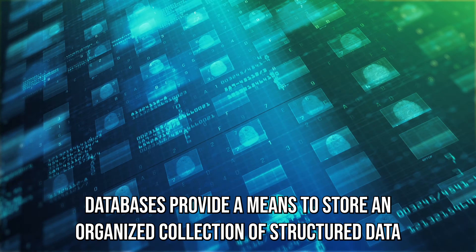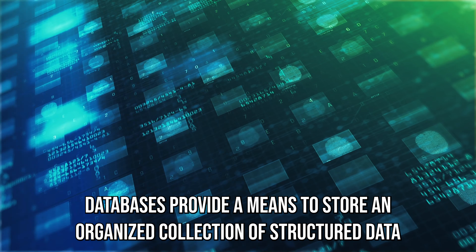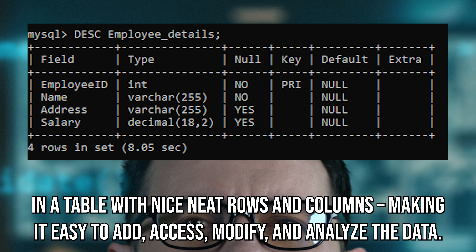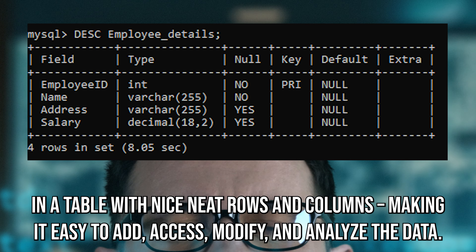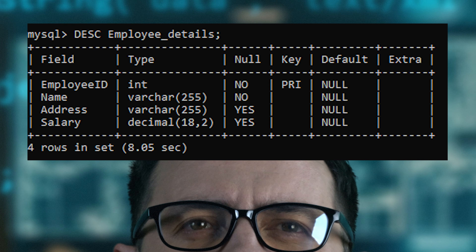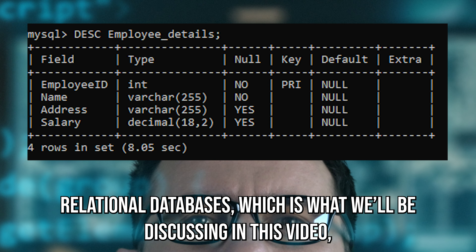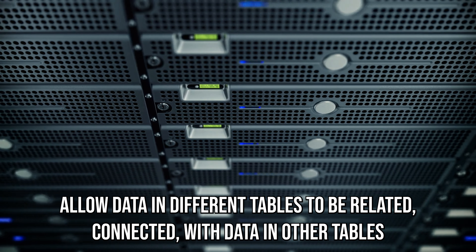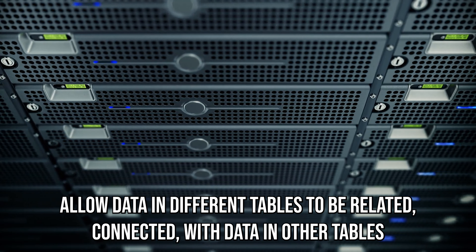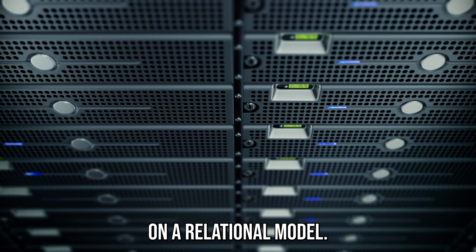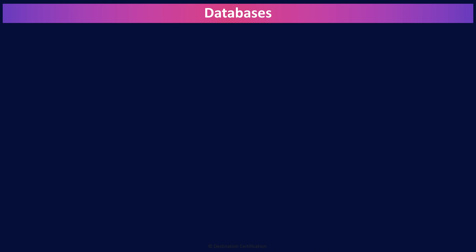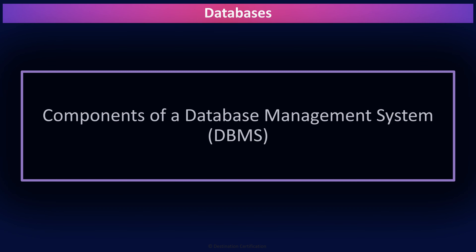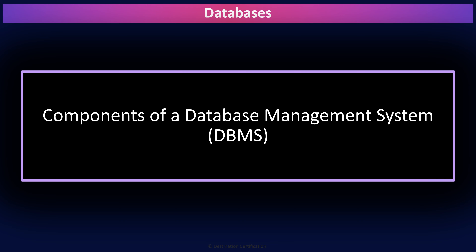Databases provide a means to store an organized collection of structured data in a table with nice neat rows and columns, making it easy to add, access, modify, and analyze data. Relational databases, which is what we'll be discussing in this video, allow data in different tables to be related — connected — with data in other tables on a relational model. A database management system is the collection of components that allow the database to be controlled and used by people and processes. We'll start by looking at the components of a database management system, and then we'll get into the relational components of a database.